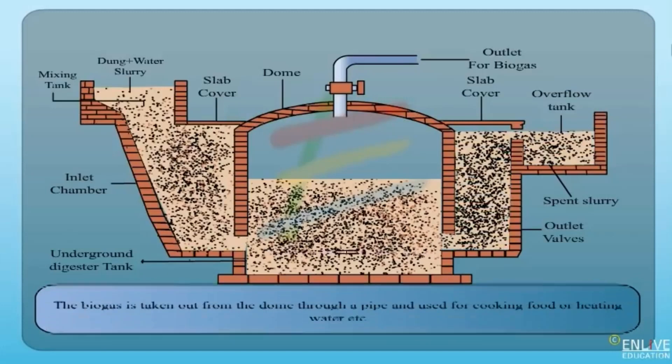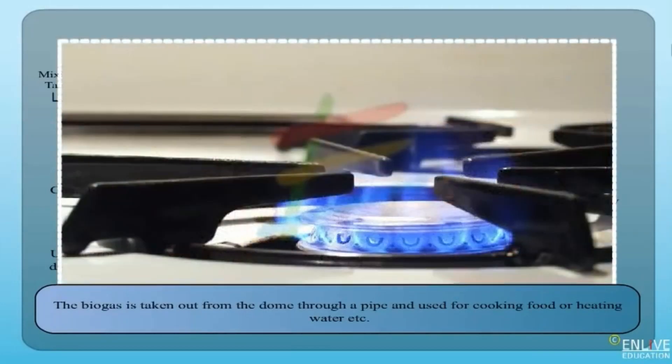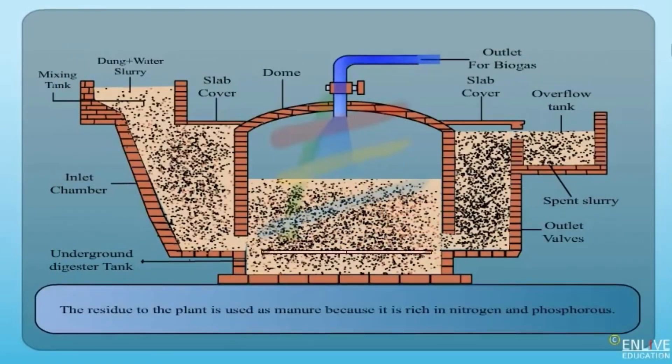Feeding the digester: Introduce a mixture of organic waste into the digester through the inlet pipe. Feed the digester regularly to maintain consistent gas production.